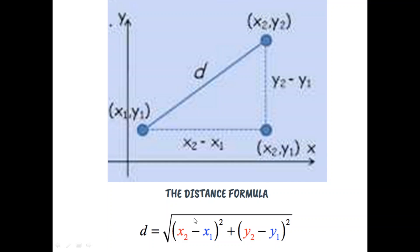So this is our formula, also known as the distance formula. D is equal to the square root of the quantity x2 minus x1 all squared plus the quantity y2 minus y1 all squared.